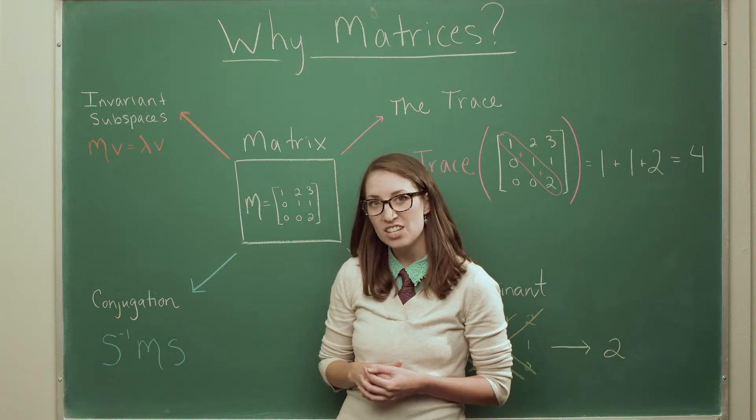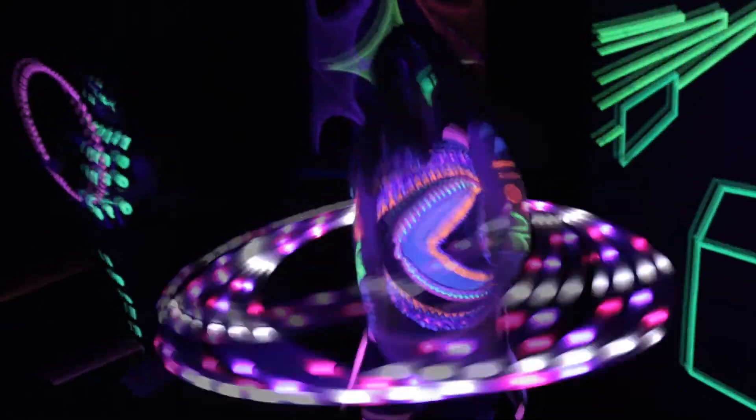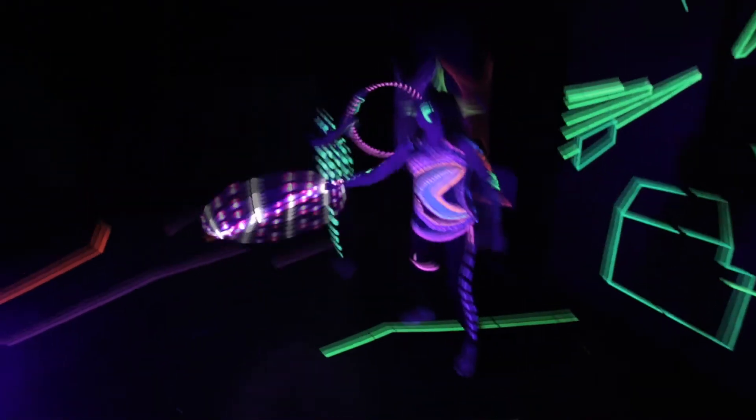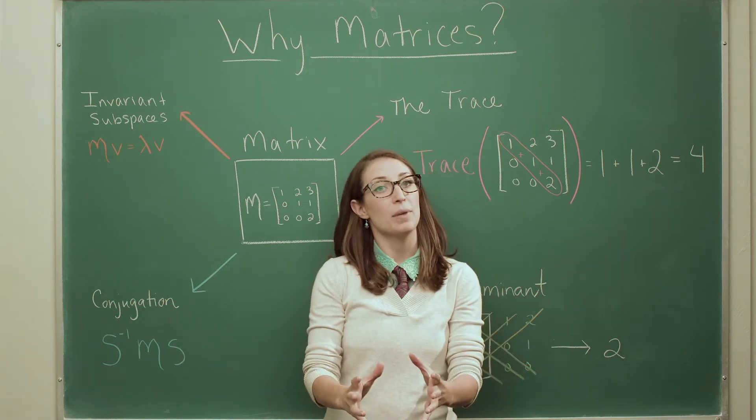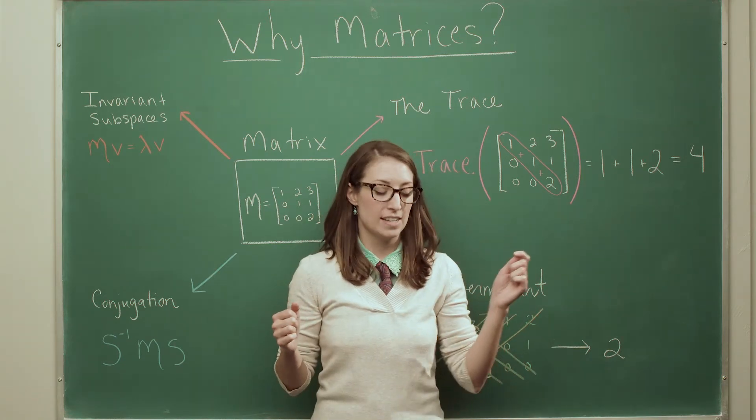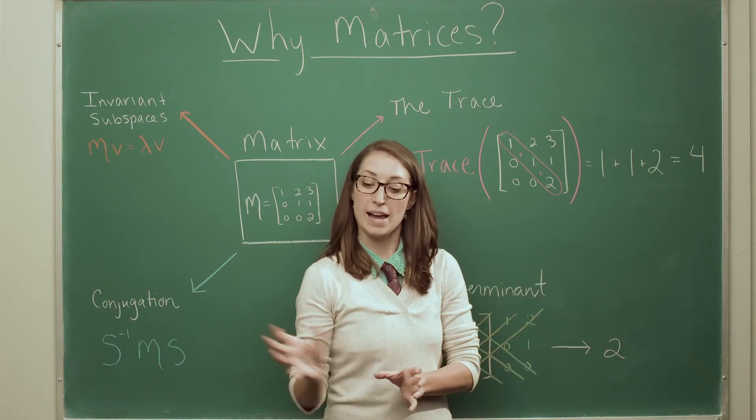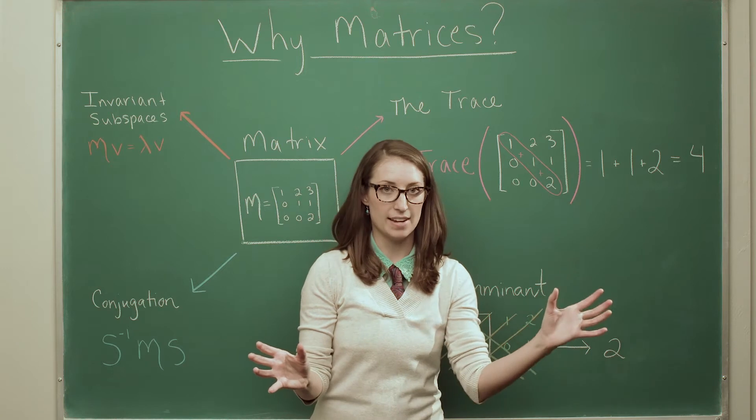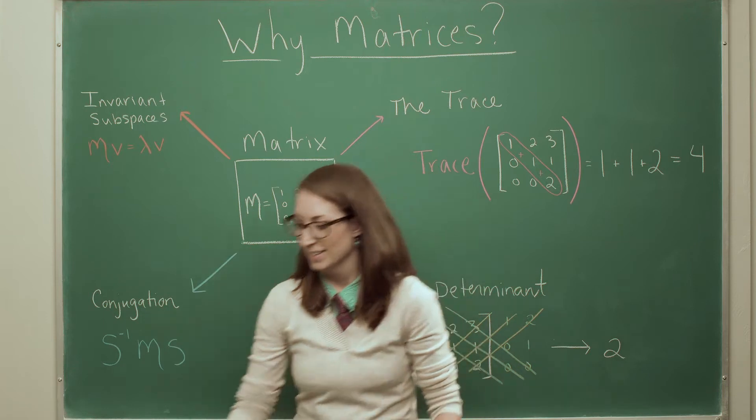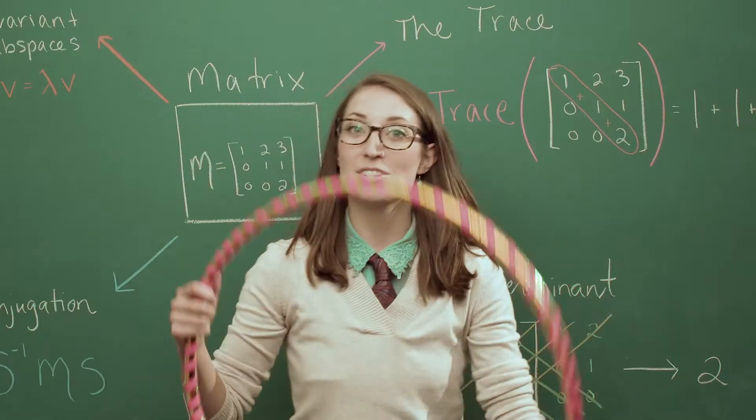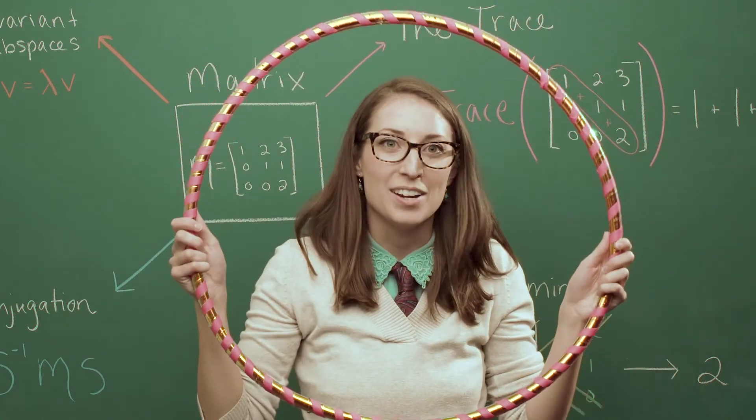The next thing that we did was conjugation. And in this part of the video, we saw a hula hoop dancer, and she is just an amazing dancer. It was super fun to have her in the film. And what you do by conjugation is you take your matrix M that you want to study, and you take a new matrix S, and you multiply on one side of the matrix M by S inverse, and on the other side by S. So what you're doing is sort of encircling the matrix M. And that's why I chose to represent it with a hula hoop, because you're kind of encircling your matrix. I know, I'm so funny.